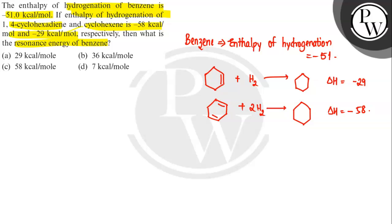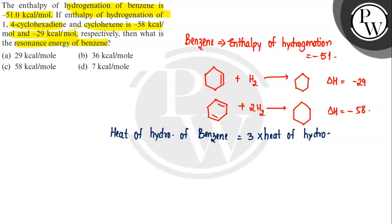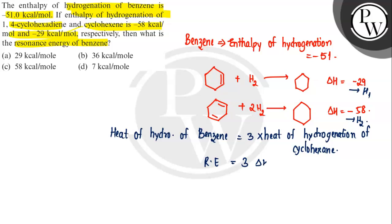Before calculating the resonance energy of benzene, we note that benzene has 3 double bonds. So the theoretical heat of hydrogenation of benzene would be 3 times the heat of hydrogenation of cyclohexene. Using H1 and H2, the formula is: resonance energy = 3 × ΔH2 − ΔH1.